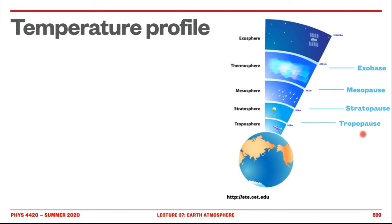I'd like to talk about the temperature profile in the atmosphere. This picture presents the different areas of the atmosphere — just be careful that it's not to scale. The radius of the Earth is about 6,000 kilometers. We have just 20 kilometers here and 10,000 there, so clearly no linear scale. We go from troposphere, stratosphere, mesosphere, thermosphere, exosphere, and then the areas in between: tropopause, stratopause, mesopause, and exobase.